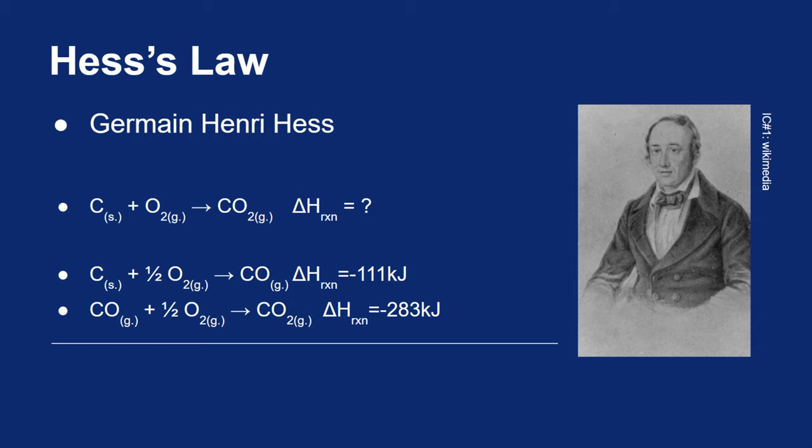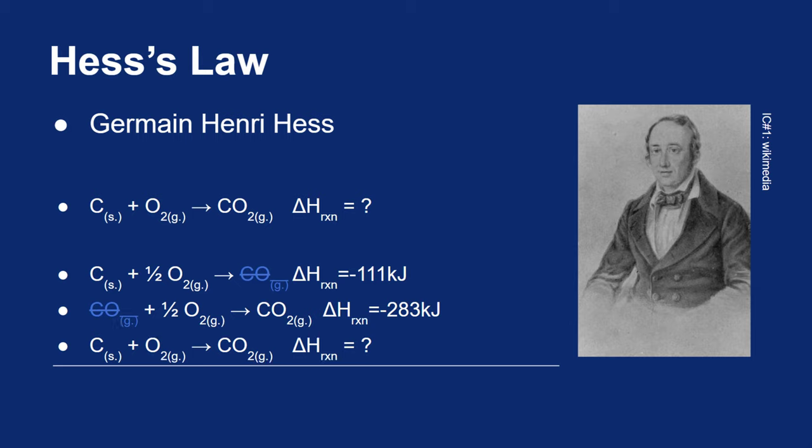If I want to find the overall reaction, if you take a look of these two reactions, I have carbon monoxide on either side. So they actually can cancel each other out. And then I can just add the two reactions together. I have one carbon, I have half an oxygen and half an oxygen to make a full oxygen, and a carbon dioxide. So those two reactions actually add up to the overall reaction that I'm looking for.